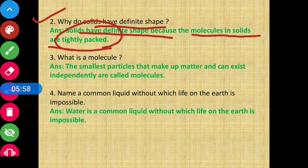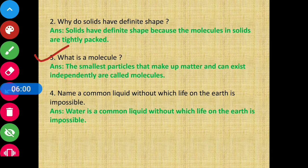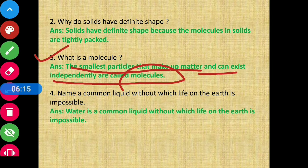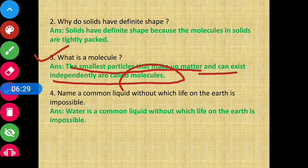Question number 3 - what is a molecule? The smallest particle that makes up matter and can exist independently is called a molecule. वो smallest particle है जिससे कोई भी matter बना हुआ होता है और वो independently exist करने की capability रखता है। Single-single molecules मिलके पूरा matter तैयार करते हैं।